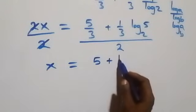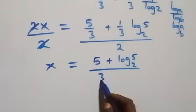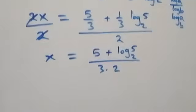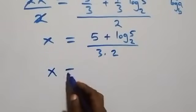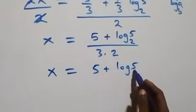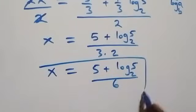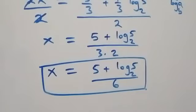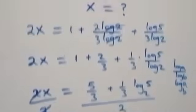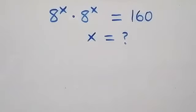That is, five plus log 5 base 2, then over three times three here, which is the same thing as x equals to five plus log 5 base 2 over 6. Here we have the value of x as five plus log 5 base 2 over 6. Now let's check if this satisfies the given problem — that is, we substitute the value of x here.